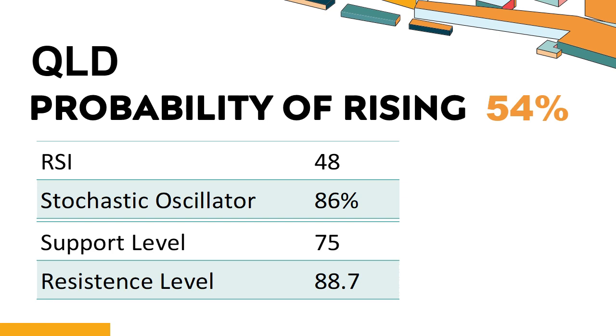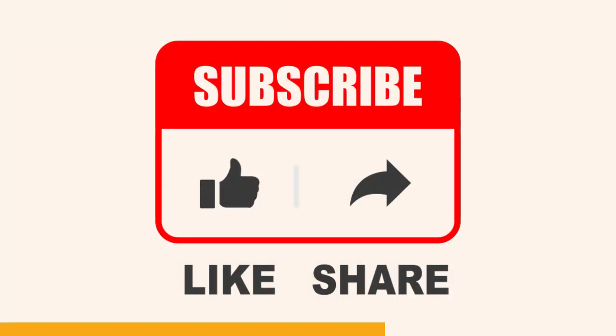QLD's short-term resistance level is 85.6. If it breaks through 85.6 during the session, it will look up to 88.7.